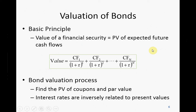The valuation of bonds, just like any financial security, equals the present value of all future expected cash flows generated by the security. You need to find all the coupons and also the face value — also called par value — which is $1,000, and discount all of them. The interest rate you use, which is also the yield to maturity or required return, has an inverse relationship with bond value: when the denominator goes up, the value goes down.